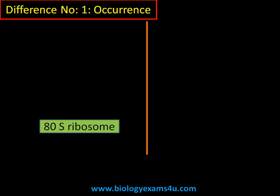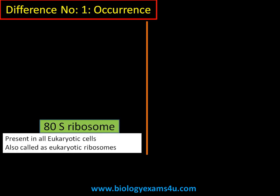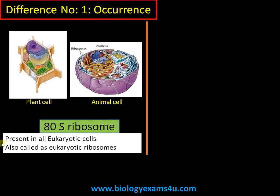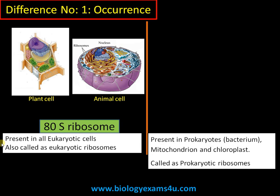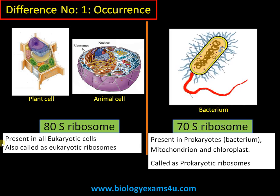Starting with difference number one — occurrence. 80S ribosomes are present in all eukaryotic cells and are also called eukaryotic ribosomes. They are present in plants, animals, fungi, etc. 70S ribosomes are present in prokaryotes like bacteria, and also in semi-autonomous organelles like mitochondria and chloroplasts. They are called prokaryotic ribosomes.